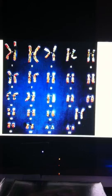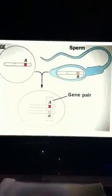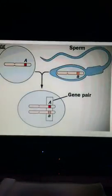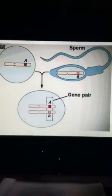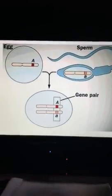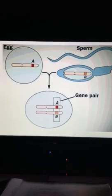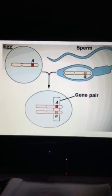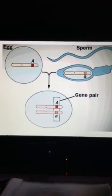Now, if an organism has two sets of chromosomes, that is called diploid. For example, the cell here at the bottom is diploid because it has two sets of chromosomes — one from the mom, one from the dad.